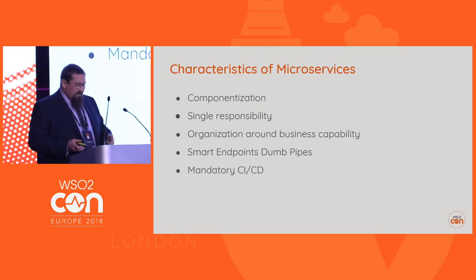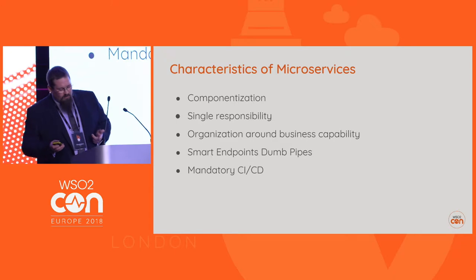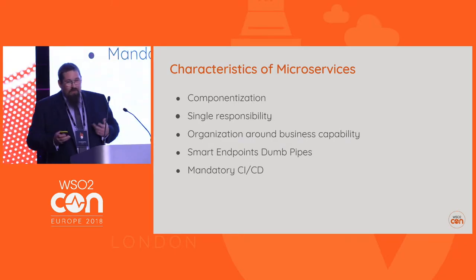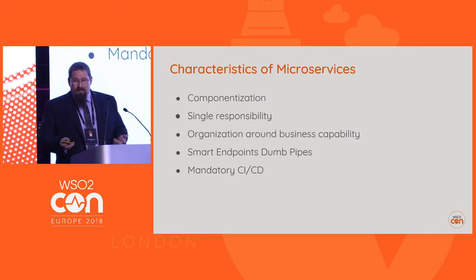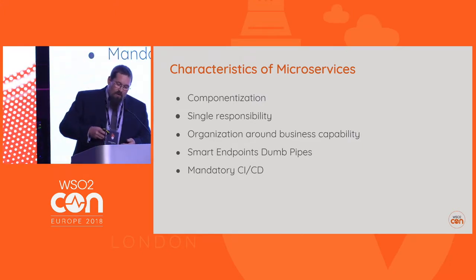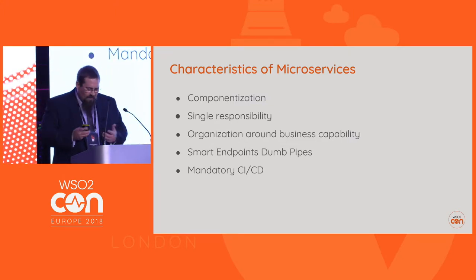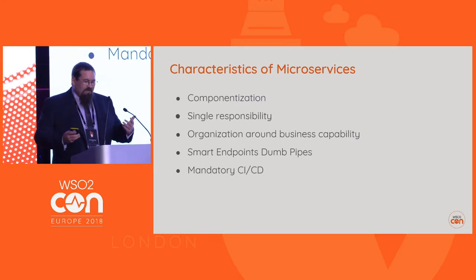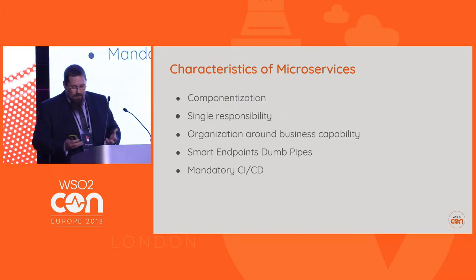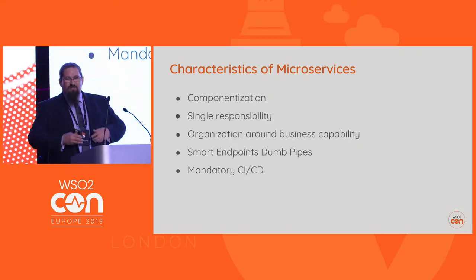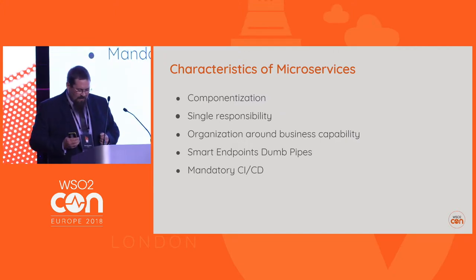You also want to aim for no centralized organization. Smart endpoints, dumb pipes — your services should know how they communicate with the world, what they need to communicate with, whether that's via a command-control pattern or via events. In this area, the dependency element needs to be considered. You try to make them as independent as possible, but with them having to know about other systems and services, you're slowly building up those dependencies again. It's a tricky balancing act.